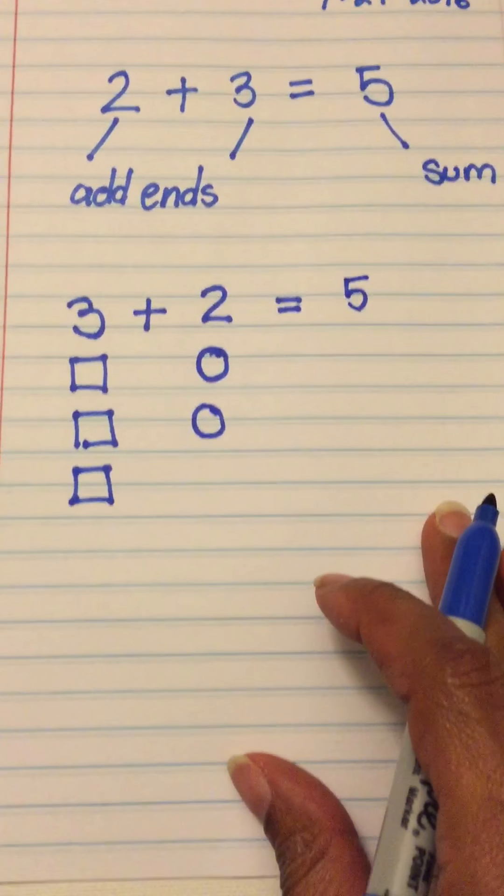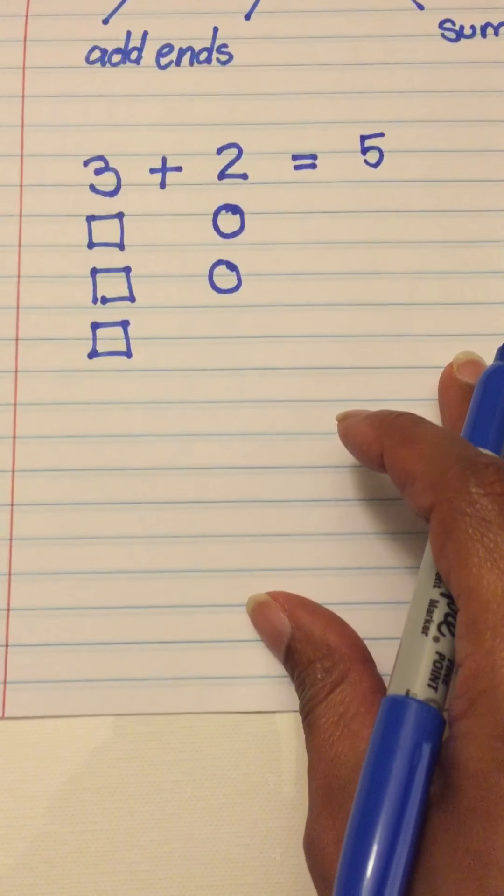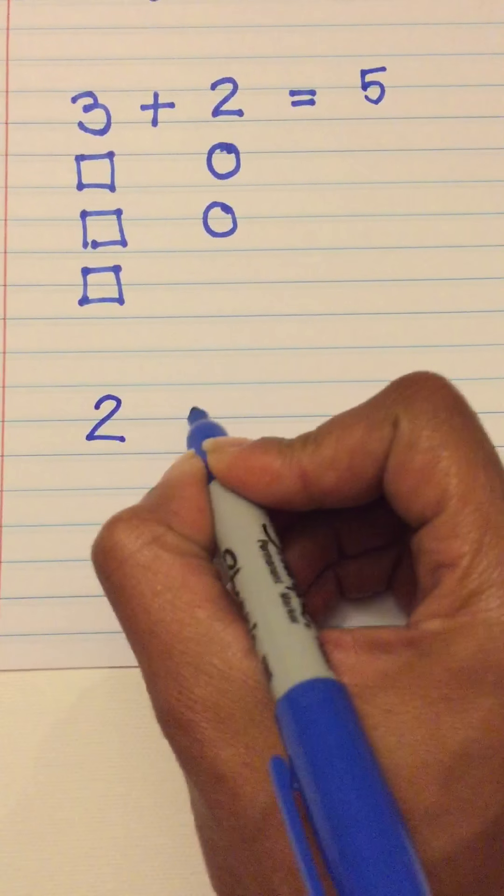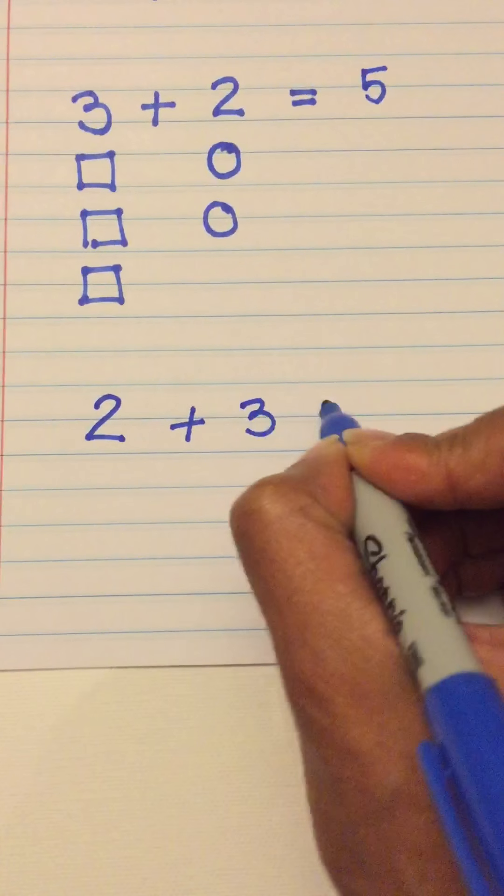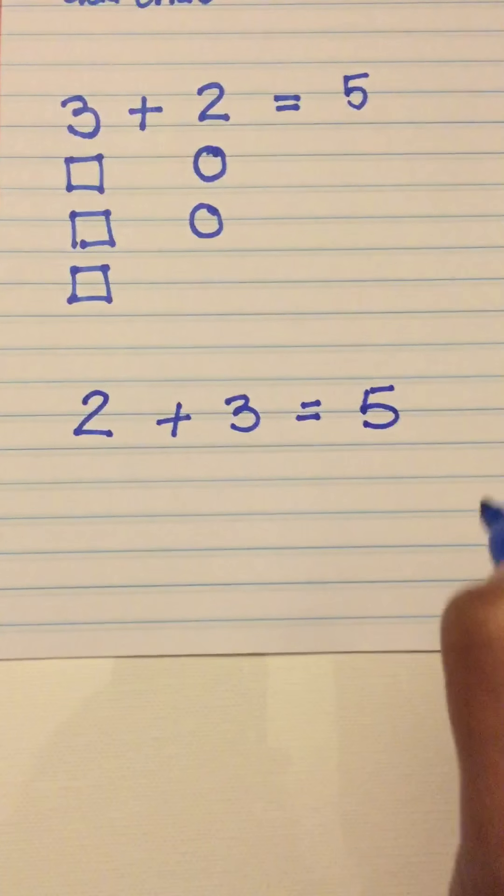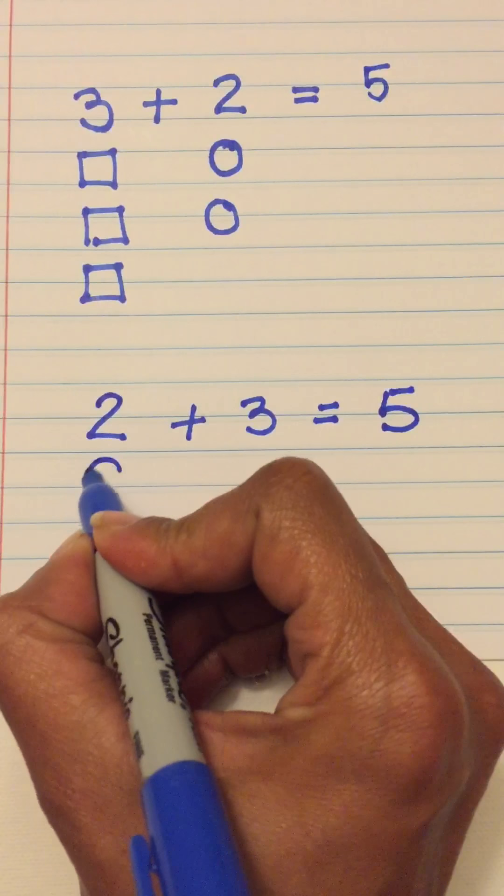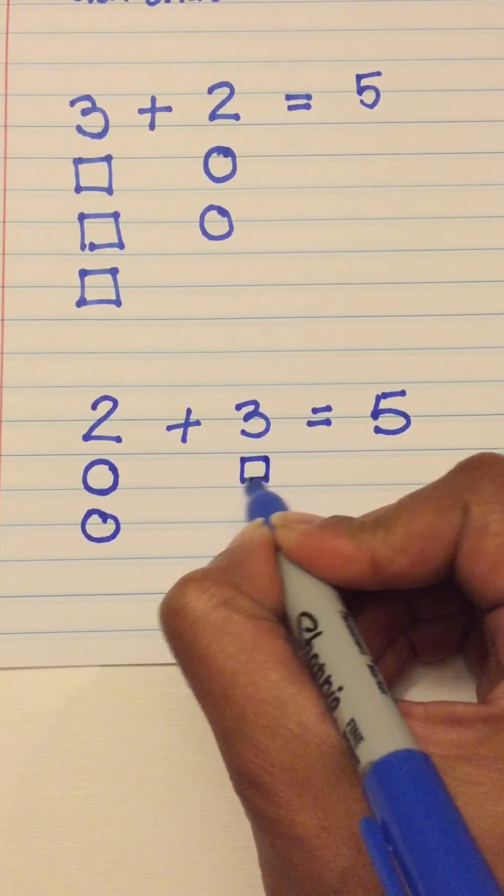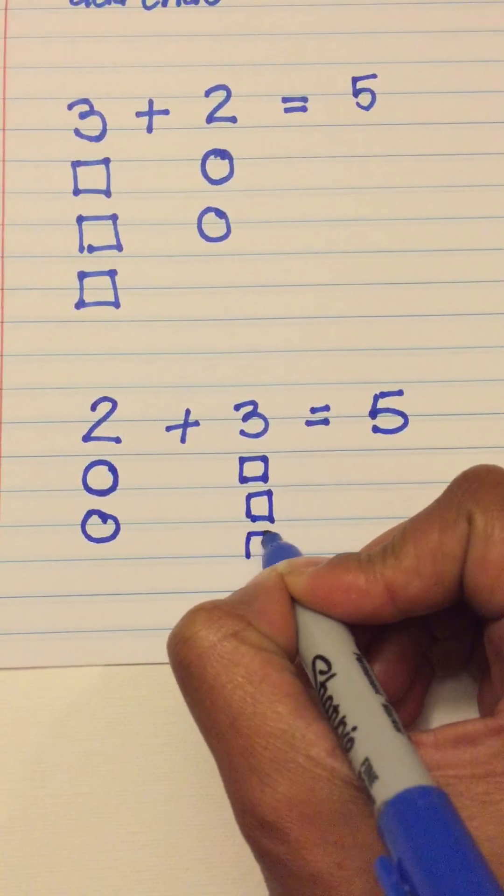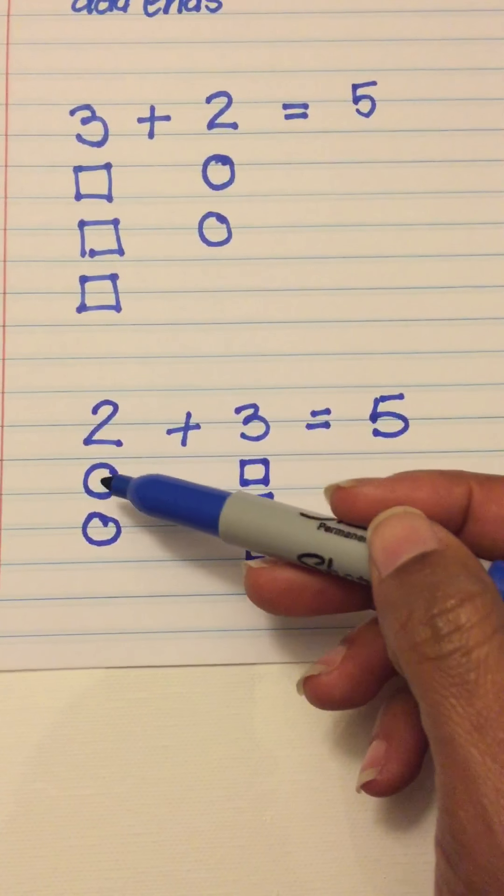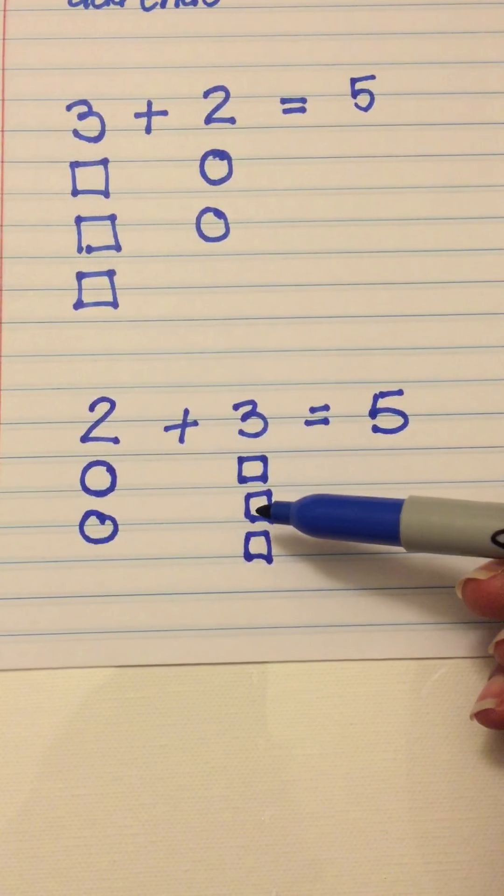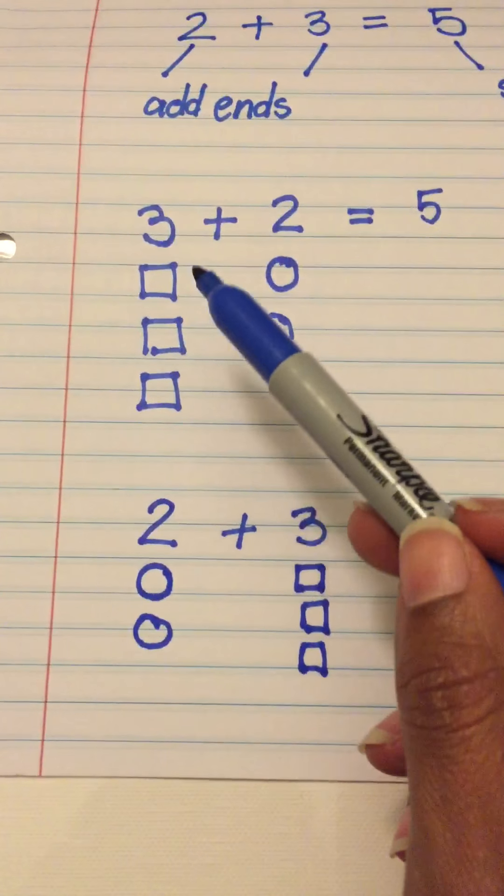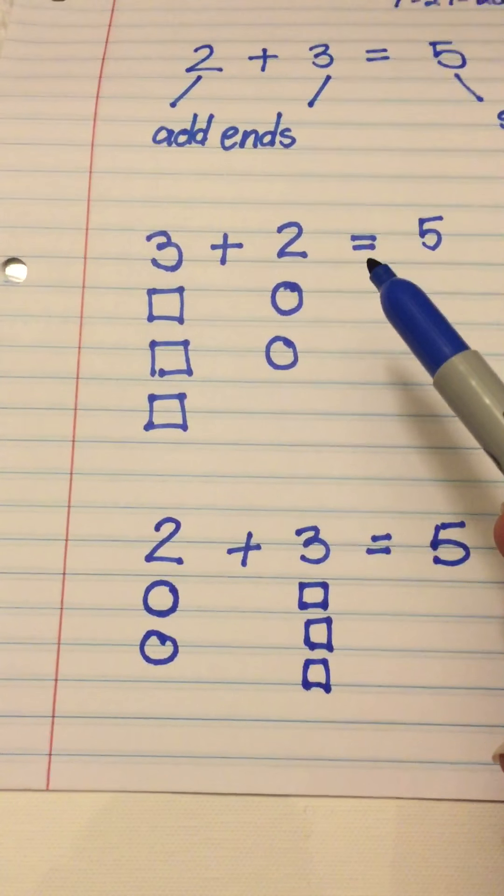Let's flip those addends again to see if anything changes. Let's take a look at it again. Here we go. One, two, three, four, five. Let's check. One, two, three, four, five. Two plus three equals five. And three plus two equals five.